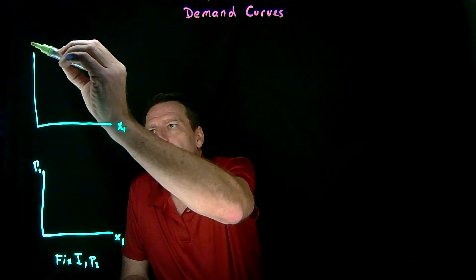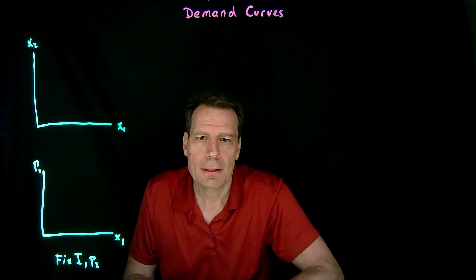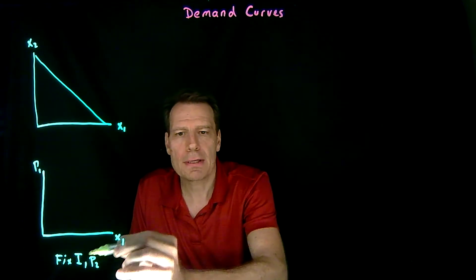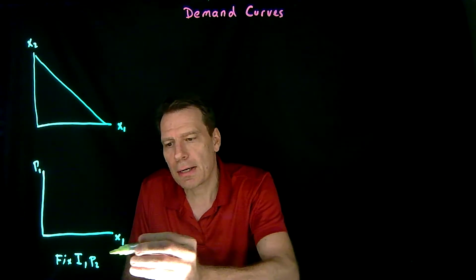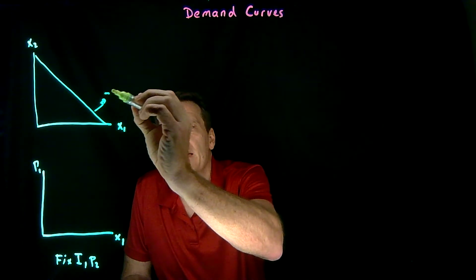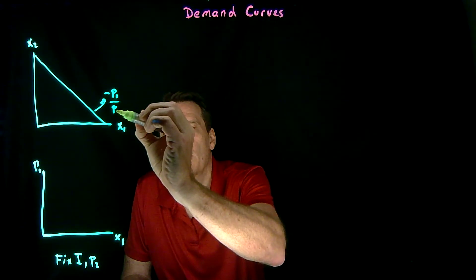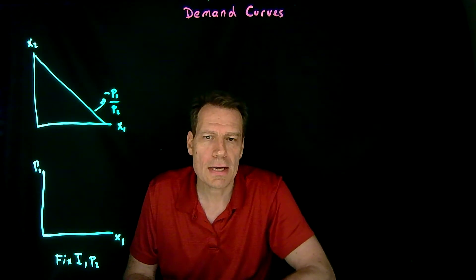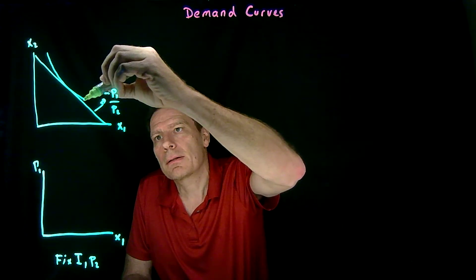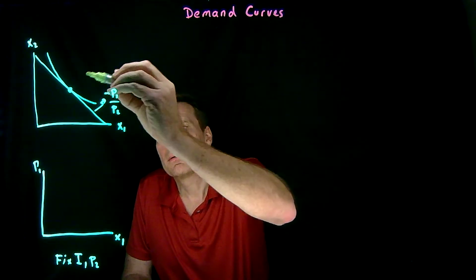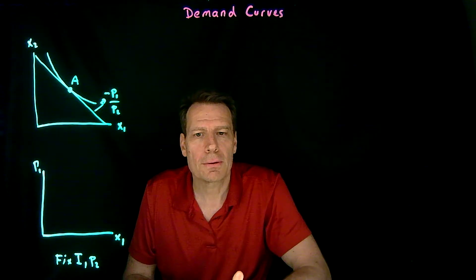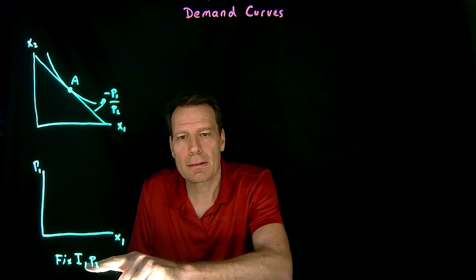In the consumer diagram we put x1 on one axis and x2 on the other axis, and we start with some initial budget constraint. That initial budget constraint has a certain level of income that we're going to hold fixed. It also has a price of good 2 in the slope that we're going to hold fixed, so the slope here is minus p1 over p2, but we're going to hold p2 fixed and only change p1. We start with the optimal consumption bundle on that initial budget line — we can call that bundle A — and immediately we have one point on the demand curve.